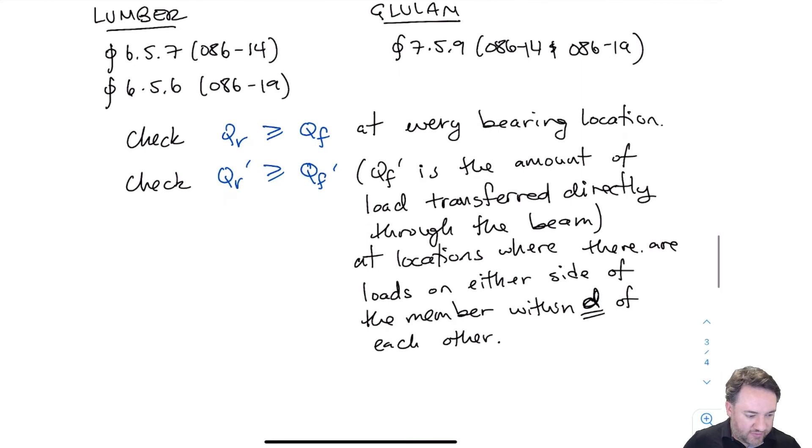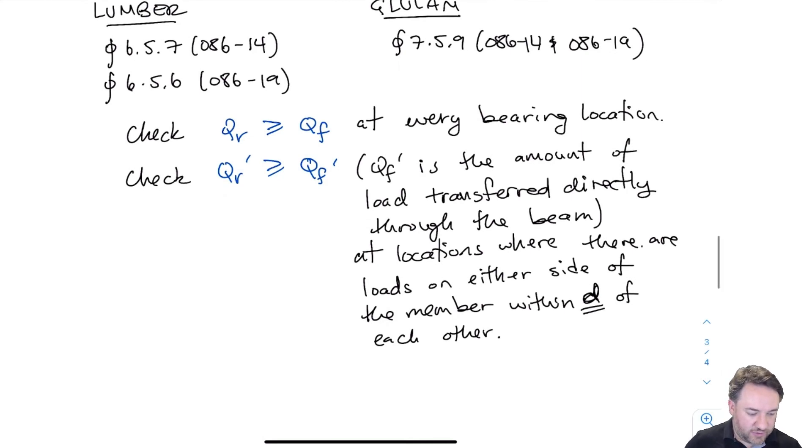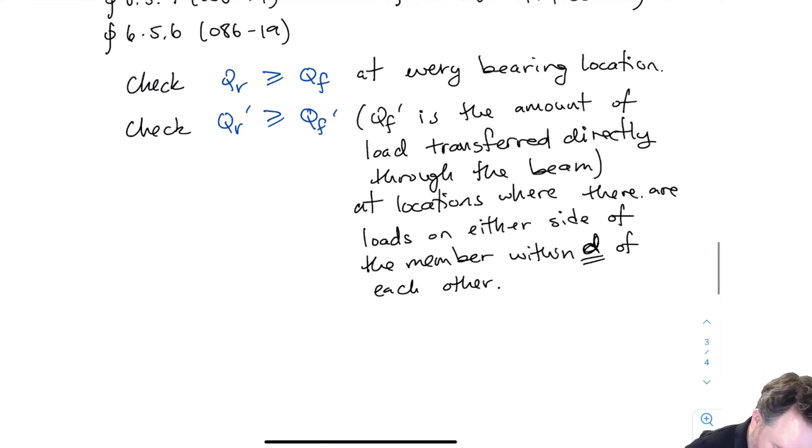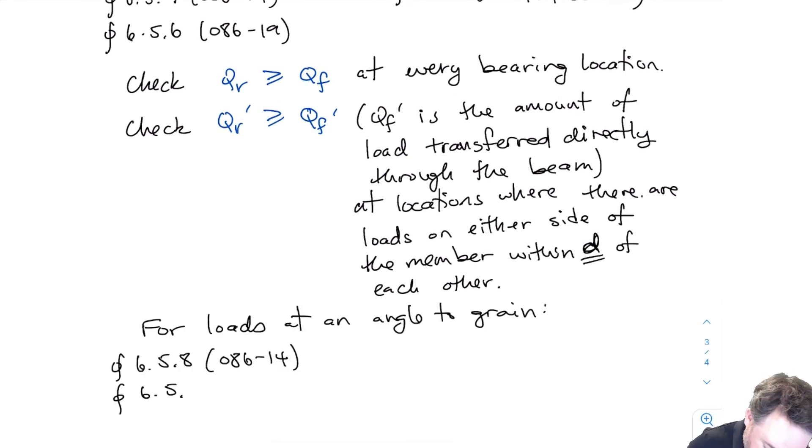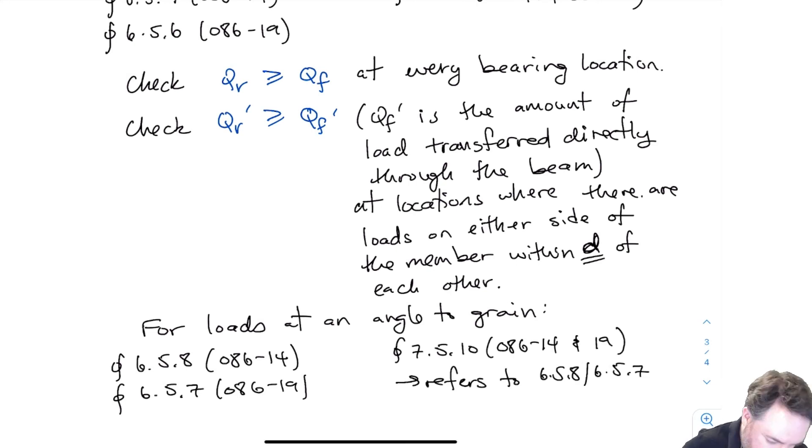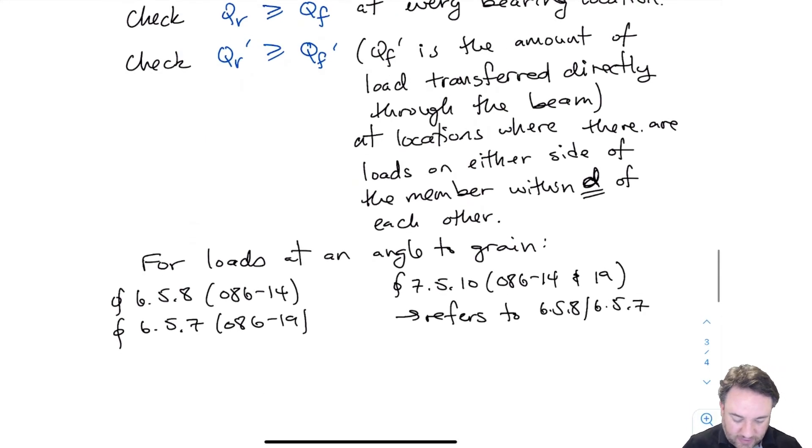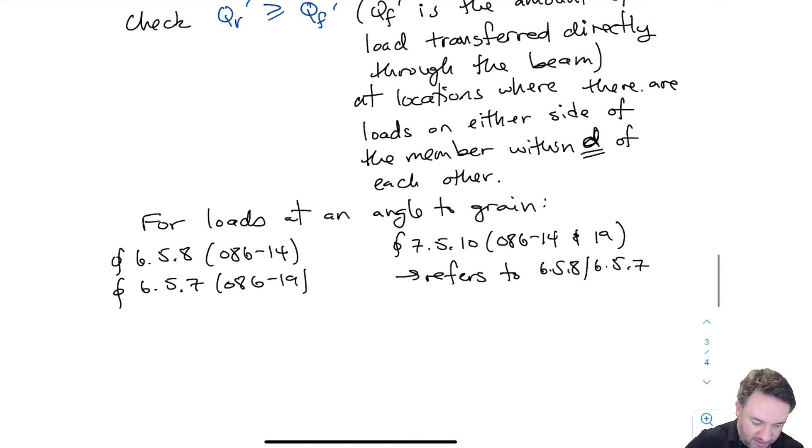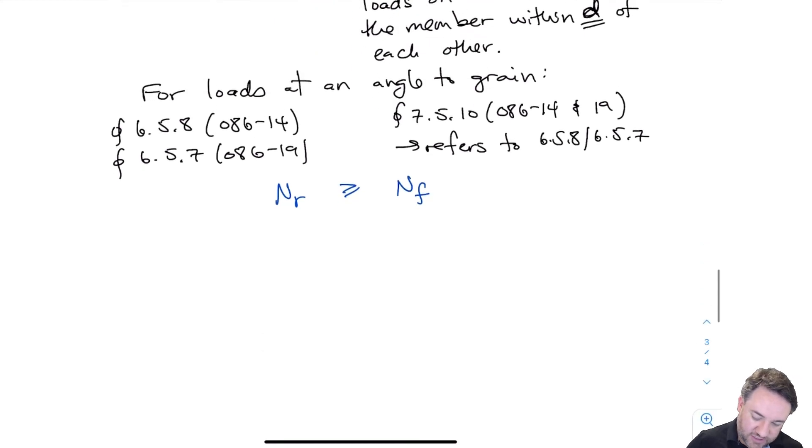And then I also have bearing resistance check if I have loads at an angle to grain, which we talked about. So for loads at an angle to grain, we have a clause 6.5.8, or which is also 6.5.7 in 086-19. And for glulam, we have the exact same approach. In fact, the standard references just back to those lumber clauses, instead of providing any alternative approach here. And for that, we calculate an NR, which is a resistance at the angle to grain, and we make sure that that is greater than NF, which is the force applied at an angle to grain.